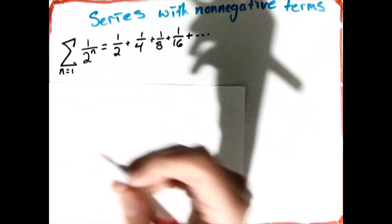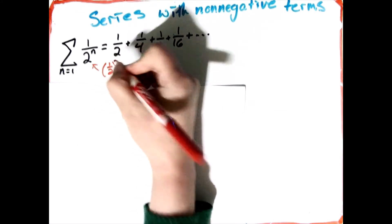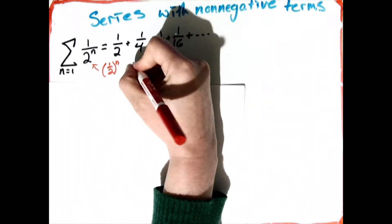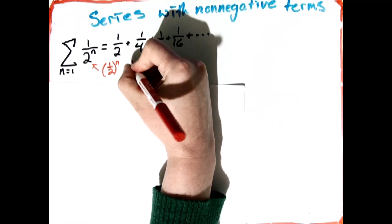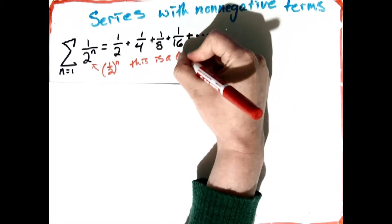Notice I'm starting at n equals 1. The other thing though to notice is that this could have really been rewritten as a half to the nth power, and I would have gotten the exact same terms, which this shows me that we have a geometric series.